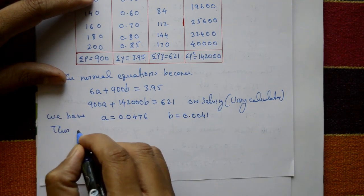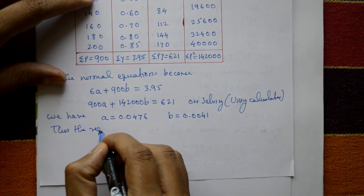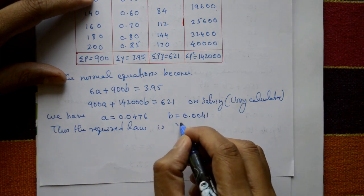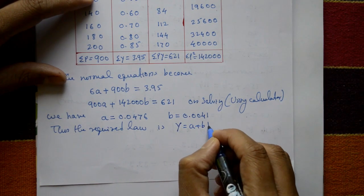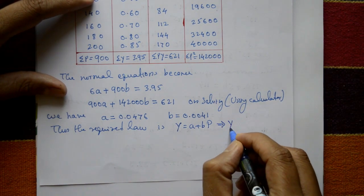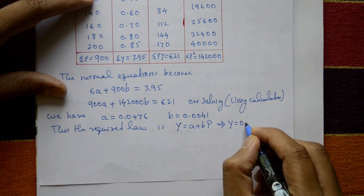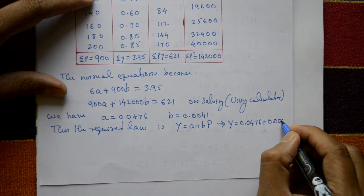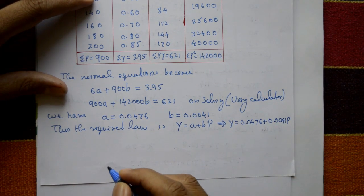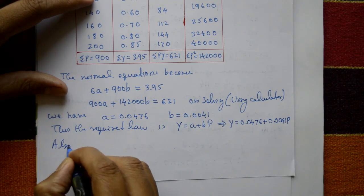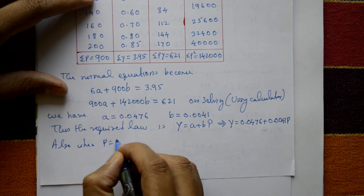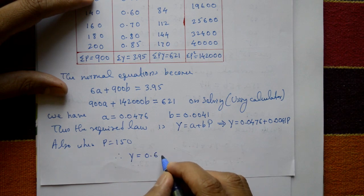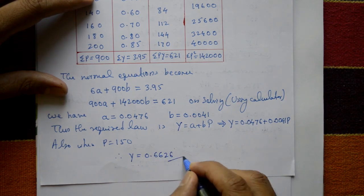Thus, the required law is Y is equal to 0.0476 plus 0.0041 into P. Also, when P is equal to 150, therefore Y is equal to 0.6626. This is the required solution.